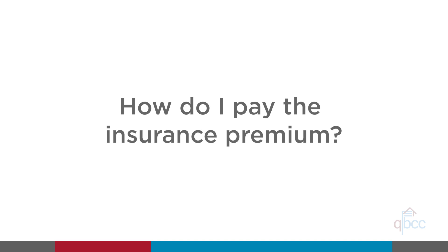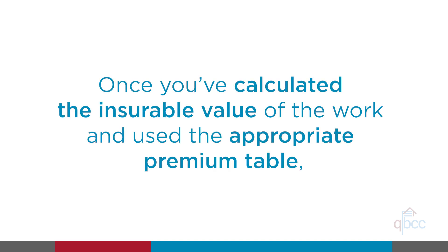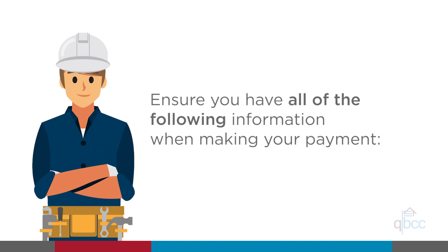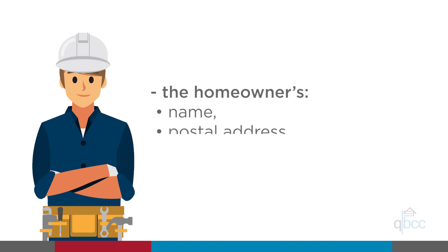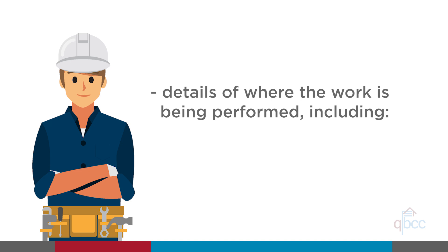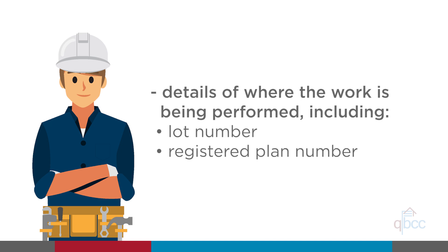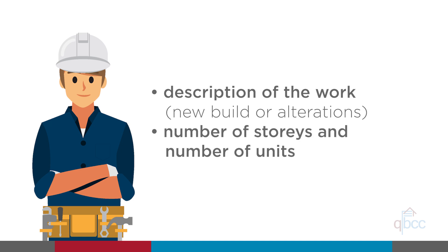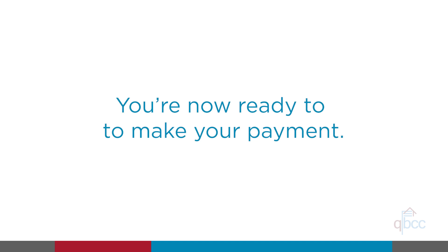So how do I pay the insurance premium? Once you have calculated the insurable value of the work and used the appropriate premium table to calculate the premium owing, you are almost ready to contact QBCC to make the payment. In addition to the insurable value and the premium amount owing, please ensure you have the following information to hand: the homeowner's name, postal address, phone number and email address — remember to check with the homeowner that this is an email address they check regularly — details of where the work is being performed including lot number, registered plan number and street address, a description of the work such as new build or alterations, number of stories and number of units if applicable, and the date of the contract.